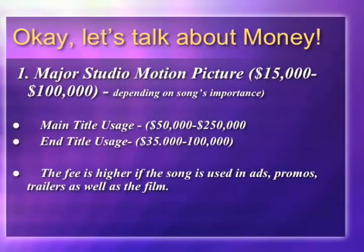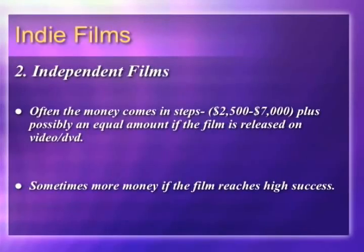Money plays a big part in placing music into film. Using a single song in a motion picture can cost anywhere from $15,000 to $100,000. The price all depends on how popular the song is and whether or not the song is used additionally in promotions and trailers for the film. Sometimes more money than the original asking price can be earned if the film is a major success or if the film is released on video and DVD.